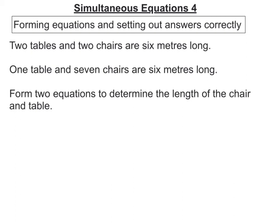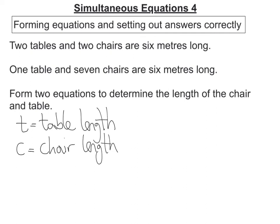So first thing I must remember to do is to define my variables. So I'm going to say that T is the table length and that will be in metres and that C will be chair length. Now I can write out my two equations.